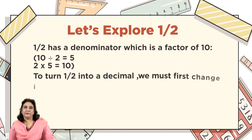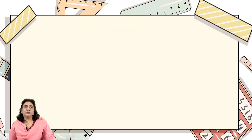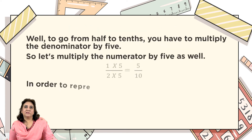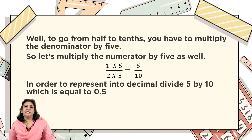Let's explore 1/2. One-half has a denominator which is a factor of ten: two divided into ten equals five, and two multiplied by five equals ten. To turn 1/2 into a decimal, we must first change it into an equivalent fraction with denominator ten. Multiply both numerator and denominator by five: one times five and two times five equals 5/10. To represent as a decimal, divide five by ten, which equals 0.5.